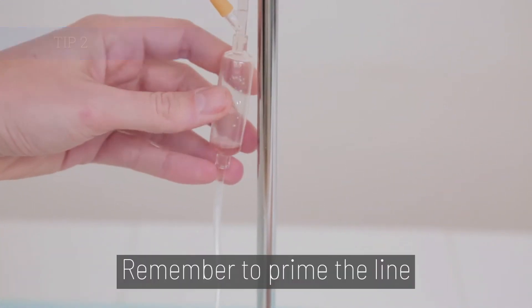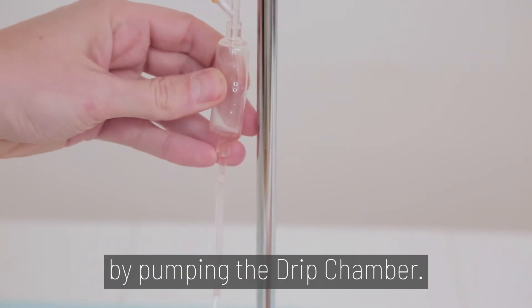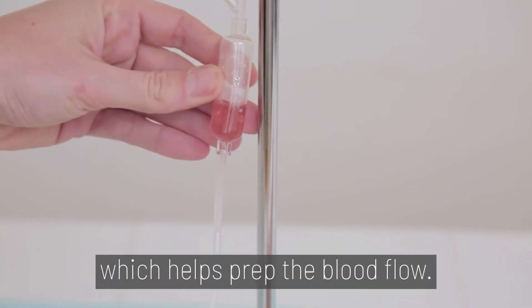Tip 2. Remember to prime the line by pumping the drip chamber. Fill the chamber about halfway, which helps prep the blood flow.